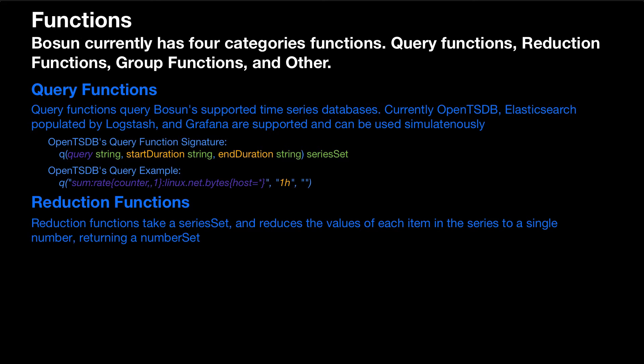Reduction functions take a series set and reduce the values of each item in the series to a single number, returning a number set. So average is an example reduction function. They always take a series set and return a number set. There are other ones such as min, median, max, percentile, the first value, the last value, and things like this.